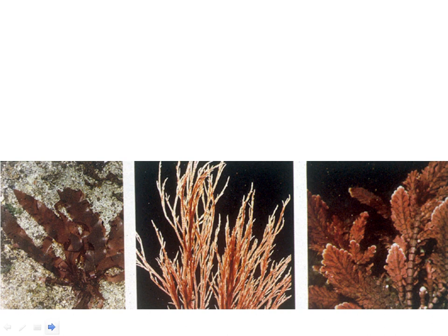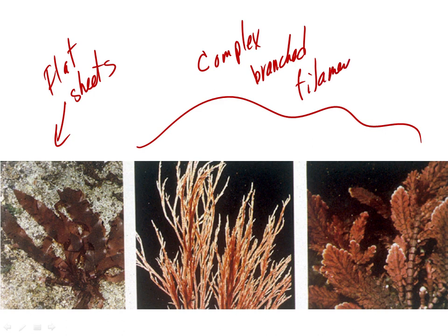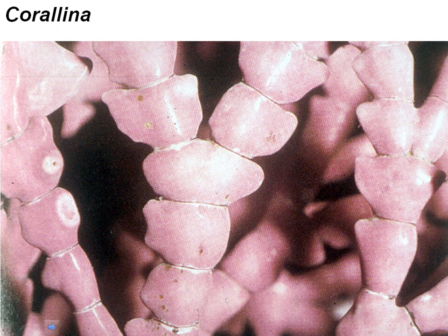Here are some of the growth forms we'd find in the red algae. Like in the green algae, we can have flat sheets. We can also have complex branched filaments. There's very complex branching in some of these filaments — complex branched filaments are a very common growth form in these algae.